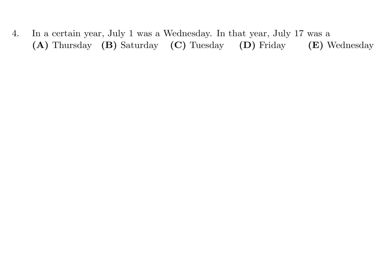In a certain year, July 1st was a Wednesday, and that year July 17th was. So we have Sunday, Monday, Tuesday, Wednesday, Thursday, Friday, and Saturday. The 1st is on a Wednesday. So we've got 2, 3, 4, 5, 6, 7, 8, 9, 10, 11, 12, 13, 14, 15, 16, 17. The 17th looks like Friday. So that would mean choice D.